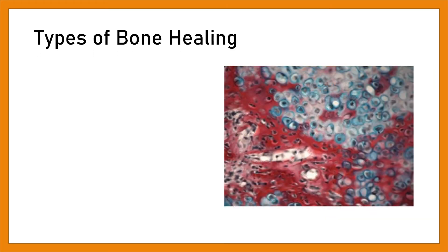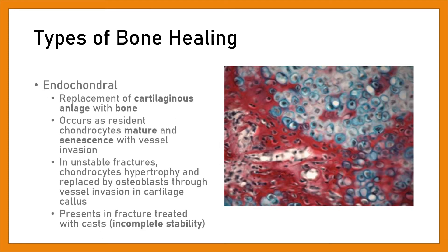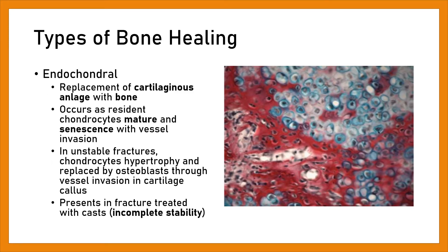Types of bone healing — Endochondral: Replacement of cartilaginous anlage with bone occurs as resident chondrocytes mature and undergo senescence with vascular invasion. In unstable fractures, chondrocytes hypertrophy and are replaced by osteoblasts through vascular invasion in the cartilage callus, present in fractures managed with cast and incomplete stability.